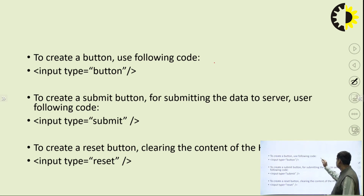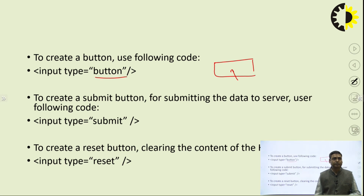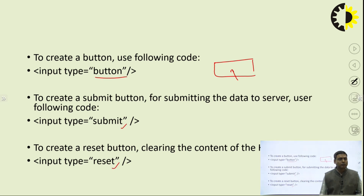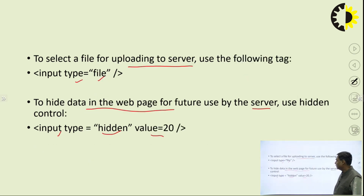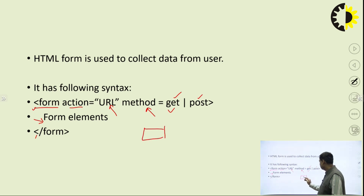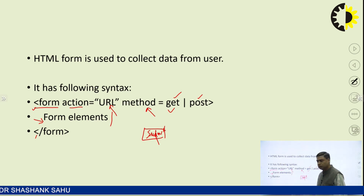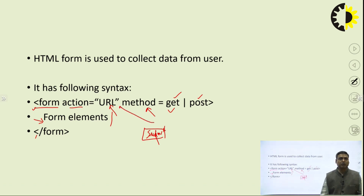If you want to create a button, write type equal to button — a button will be created and you can do further programming on it to process as per user requirements. Two buttons are very important: submit and reset. When you write type equal to submit, the data will be submitted to the server. When the submit button is clicked, all data in the form elements will go to the URL specified in the action attribute.